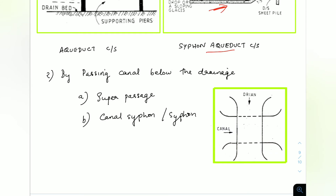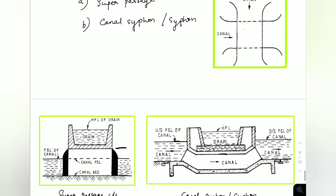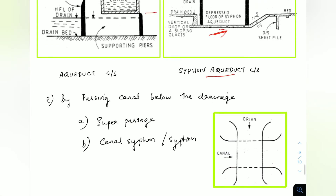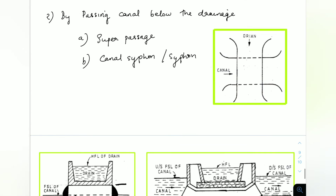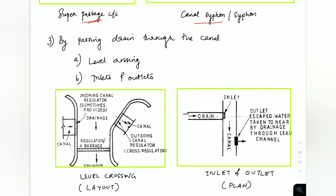The next one is passing the canal below the drainage — this is the opposite of the previous case. Super passage is the opposite of aqueduct, and canal siphon is the opposite of siphon aqueduct. Here the drain is above the canal. In a super passage, the full supply level of the canal is below the bed level of the drain. If the full supply level of the canal is above the bed of the drain, then it is a canal siphon.